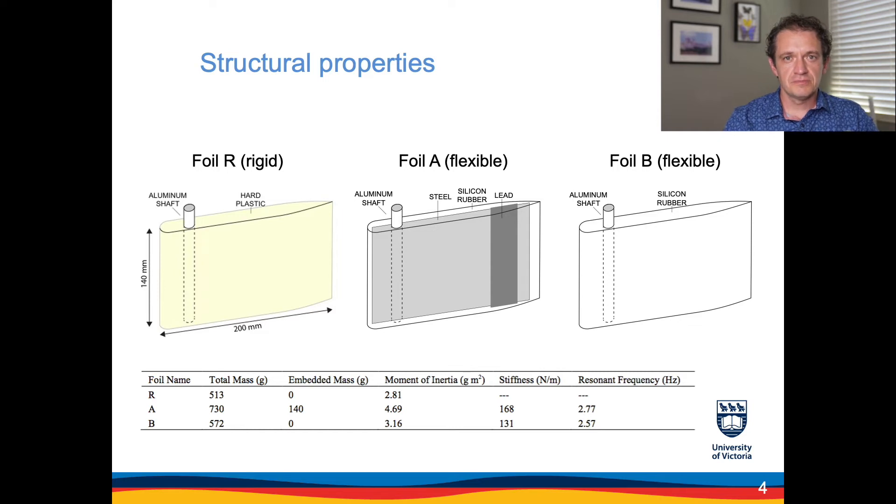The structural properties of the foil that we considered are the stiffness and inertia. We considered three cases. One is the reference case the rigid foil, and the two other cases which we refer to as foil A and foil B, or the stiff and soft foil, have the same external geometry as the rigid foil. It's essentially a thick plate with a rounded leading edge and a tapered trailing edge.